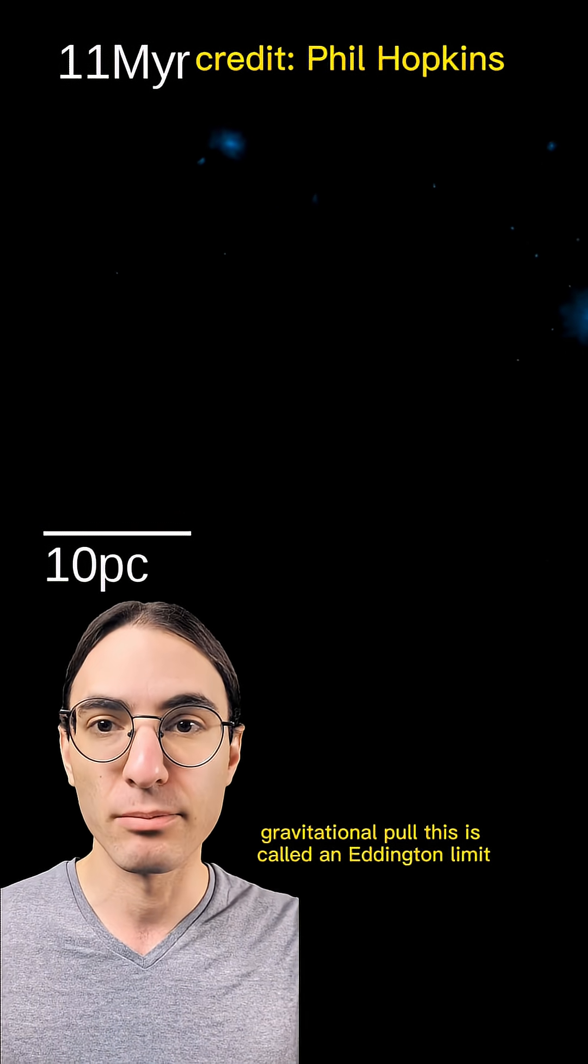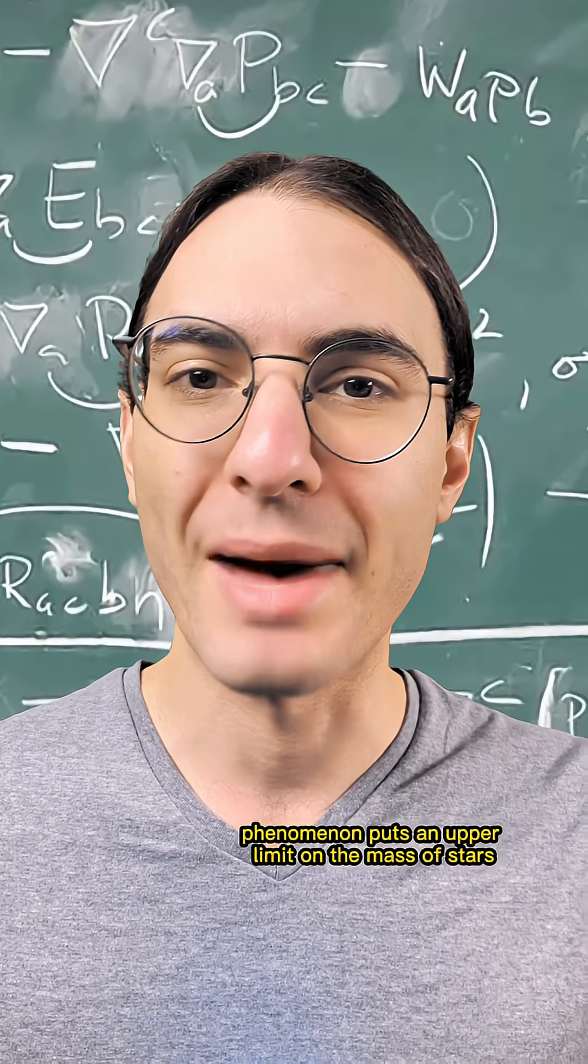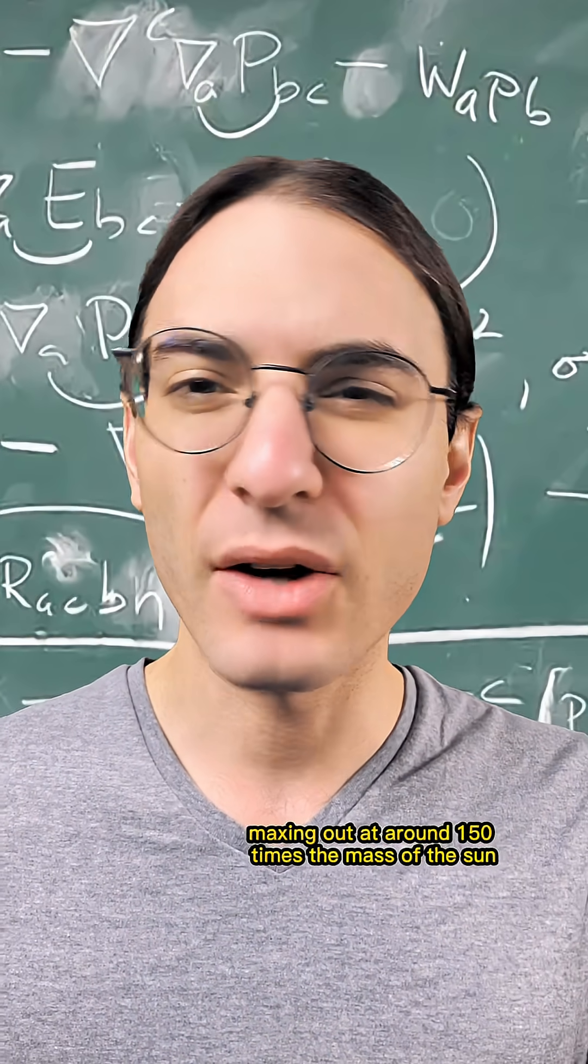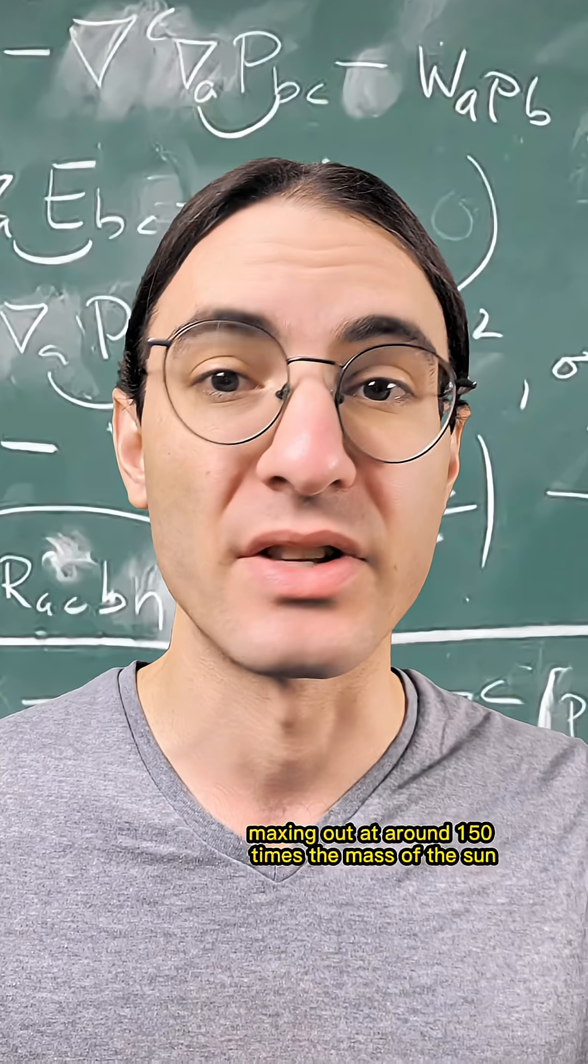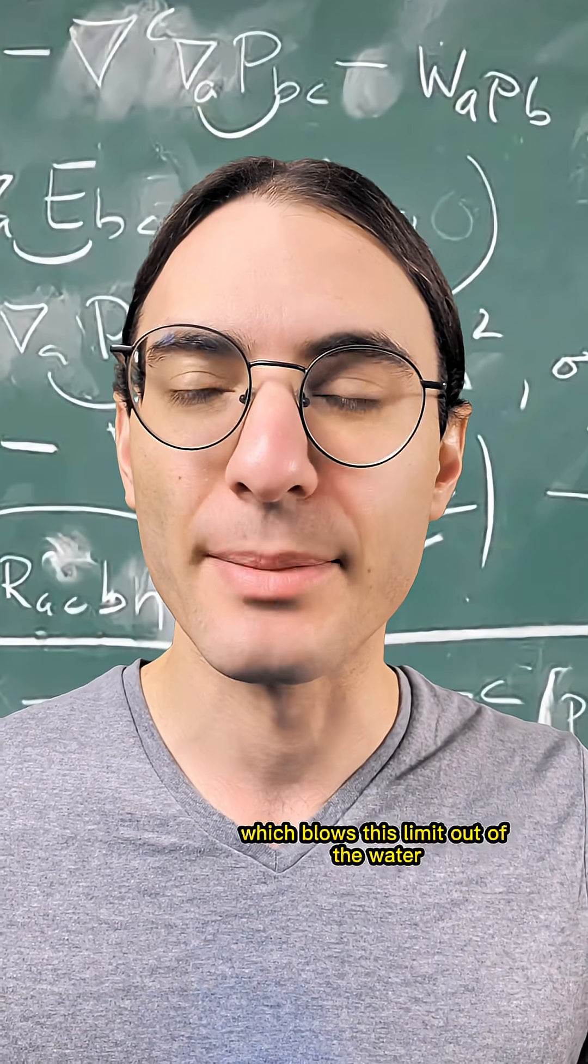This is called an Eddington limit. And it's generally accepted that this limiting phenomenon puts an upper limit on the mass of stars that can form, maxing out at around 150 times the mass of the sun. But then, there's R136A1, which blows this limit out of the water.